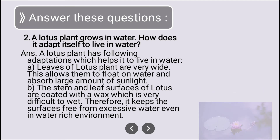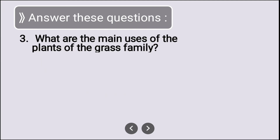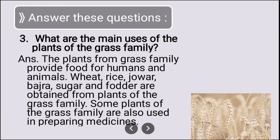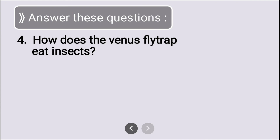What are the main uses of plants of the grass family? Plants from the grass family provide food for humans and animals. Wheat, rice, jowar, bajra, sugarcane, and water are obtained from plants of the grass family. Some plants of the grass family are also used in preparing medicines.